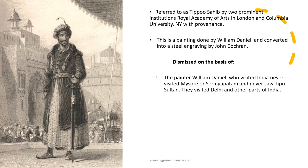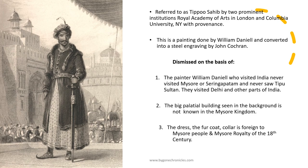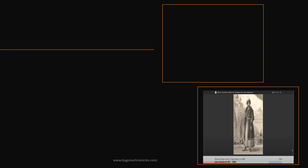The big palatial building seen in the background is nowhere seen in Mysore or Seringapatam. The painter William Daniel never visited Mysore, though he did visit North India and other parts of India. The dress as well — the fur coat — is foreign to Mysore people and Mysore royalty of the 18th century. And most importantly, Harsha informed that a friend, Charles Andrew Gregg, who is an art historian, found this image to be of Himayam, of Mughal identity, in the book The Oriental Annual or Scenes in India by Reverend Kamta. I then decided to email these organisations so that they could correct the provenance, and I found this image in the 1838 edition, the 5th edition of The Oriental Annual or Scenes in India by Reverend Kamta.